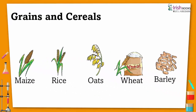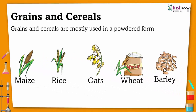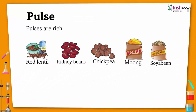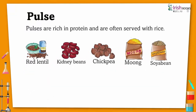Grains and cereals are mostly used in powdered form or as flour, like maize, rice, oats, wheat, and barley. Pulses are rich in protein and are often served with rice, like red lentil, kidney beans, chickpea, moong, and soya bean.